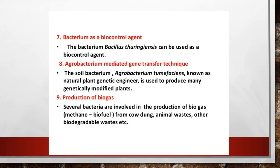Bacteria can also be used as a biocontrol agent. For example, Bacillus thuringiensis is used as a biocontrol agent instead of using chemicals as insecticide and pesticide. The soil bacterium Agrobacterium tumefaciens is known as a plant genetic engineer and is used to produce many genetically modified plants using biotechnological skills.